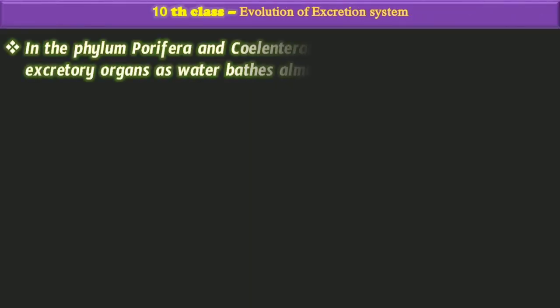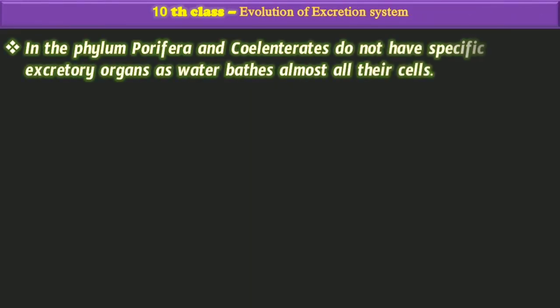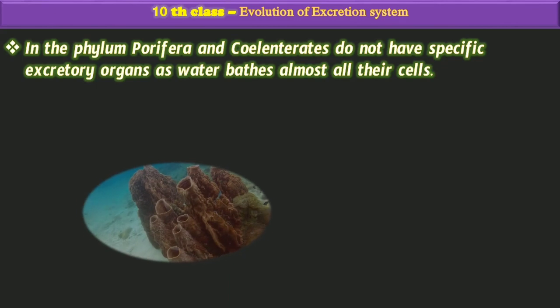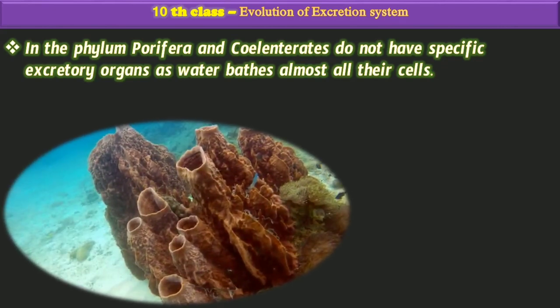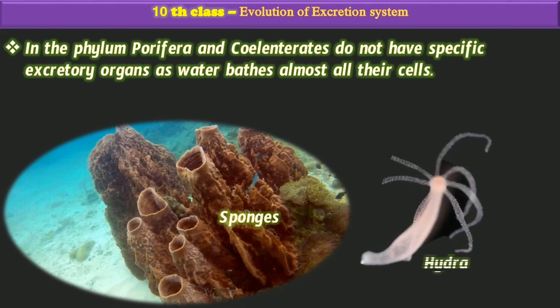In the phylum Porifera and Coelenterata, they do not have specific excretory organs. They use water that flows through almost all their cells. For example, sponges and hydra belong to Porifera and Coelenterata.